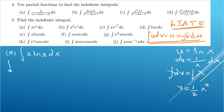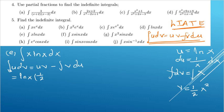dv equals x dx, and integrating gives v = (1/2)x². Applying the formula: integral of u dv = uv minus integral of v du. u is ln(x), v is (1/2)x², so we get (1/2)x²·ln(x) minus the integral of (1/2)x²·(1/x) dx.